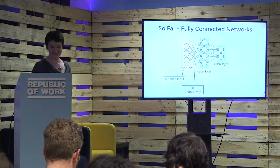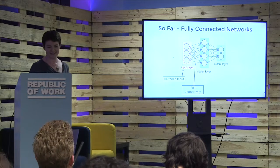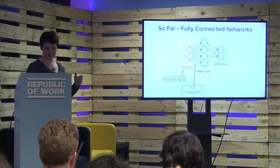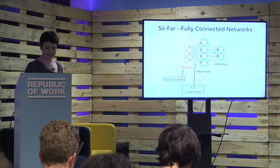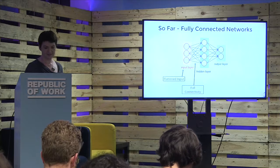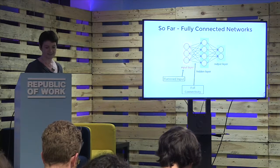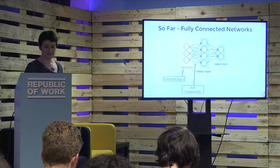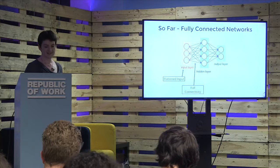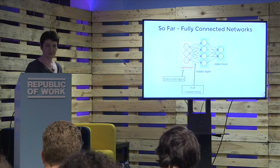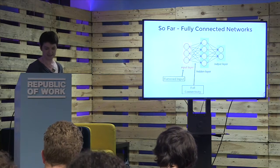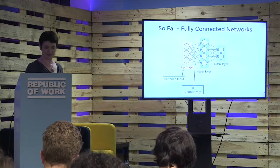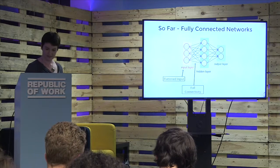So far we've looked at fully connected networks. That one we just ran was called a fully connected network, and the characteristics are that we have a flattened input layer, so we have this one-dimensional array going in, and we have full connectivity — every neuron in the first layer is connected with every neuron in the next layer, and the same all the way through the network.